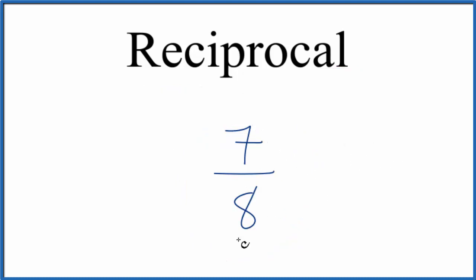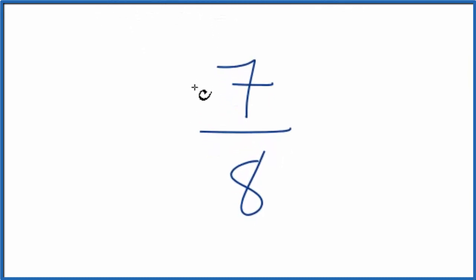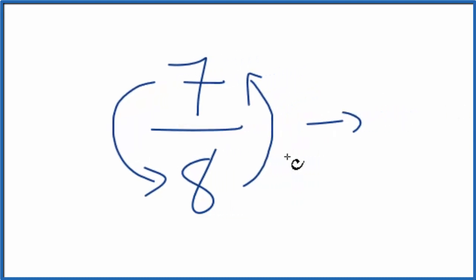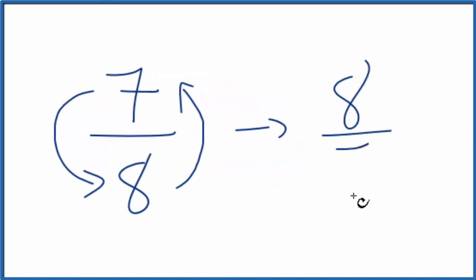We want to know the reciprocal for this fraction here. All we really need to do is take the numerator and switch it with the denominator. So the denominator moves up top, and the reciprocal for 7 eighths, that's 8 sevenths.